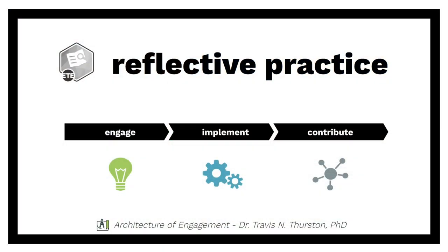Autonomy speaks to our need to be agents of our own learning. Competence is our need to feel like we've mastered or learned something well. And relatedness is that social aspect — how we learn from one another and also how we share our own patterns of competence. Each of these is important to engaging in reflective practice, and I talk about that in terms of three key terms: engage, implement, and contribute.